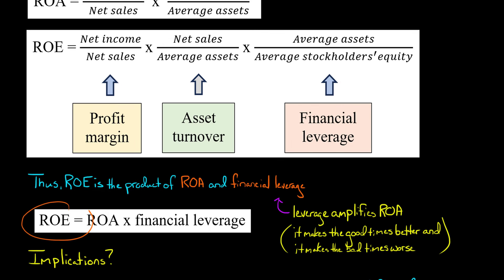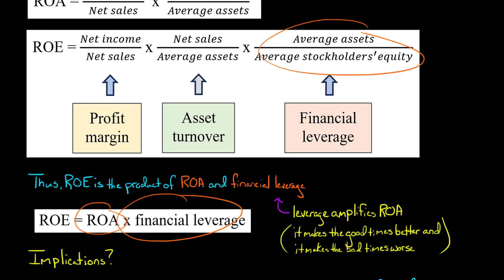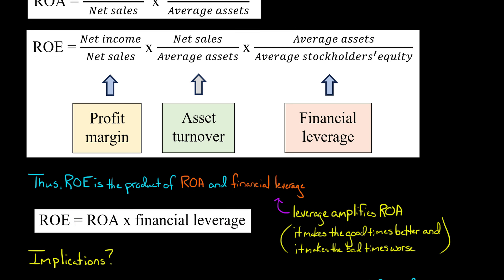A company's return on equity is equal to its ROA times its financial leverage. So the higher the financial leverage — assuming the company is profitable with a higher ROA — the higher the return on equity will be.